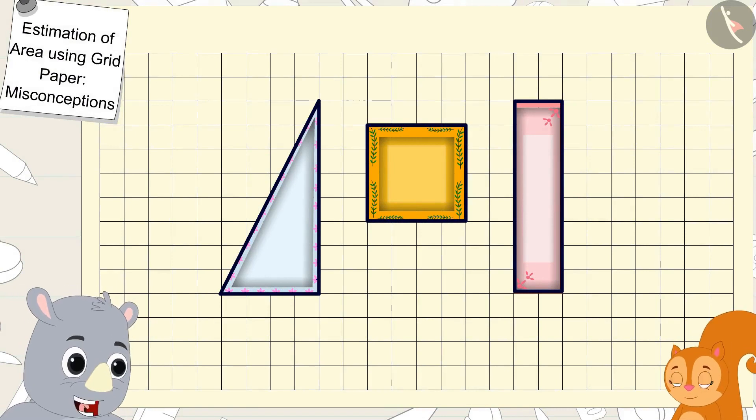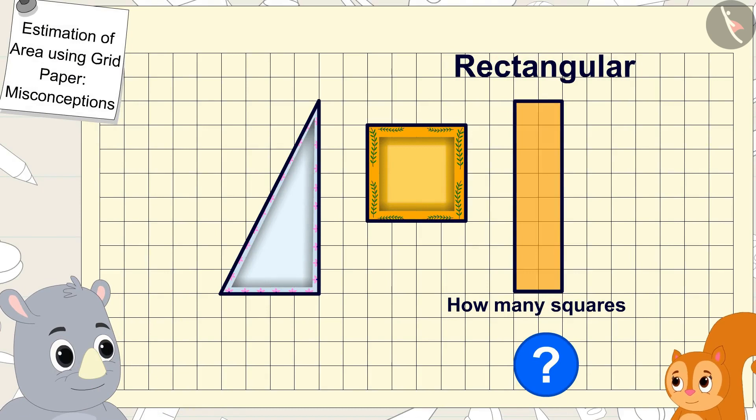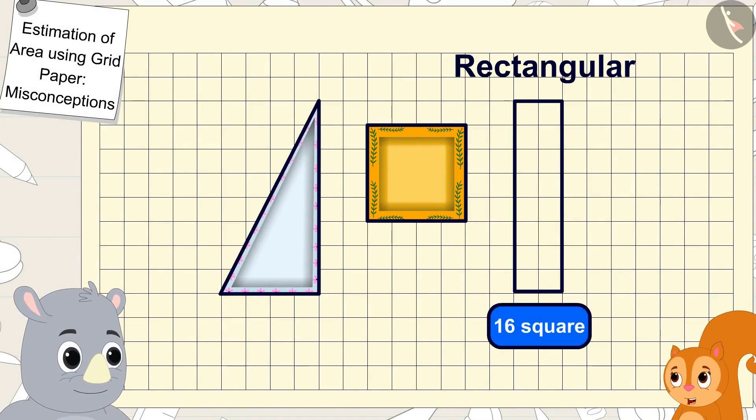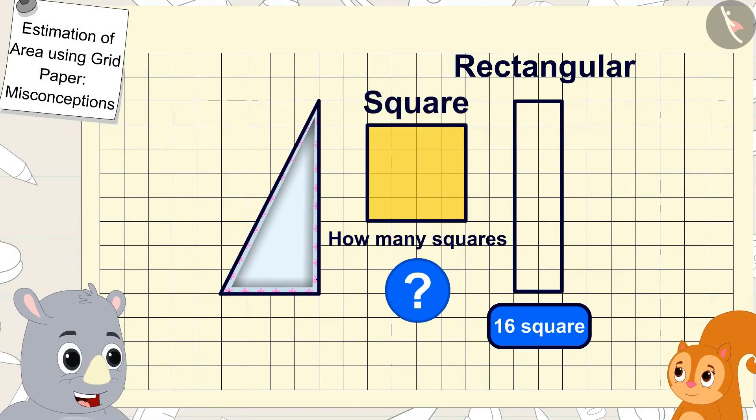Chanda, can you tell me how many squares are there in the area of the rectangular plate? Gaggoo asked. Chanda quickly counted 16 squares. And how many squares are there in the area of the square shaped plate? Gaggoo asked.